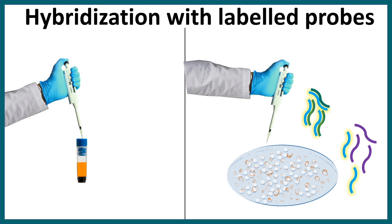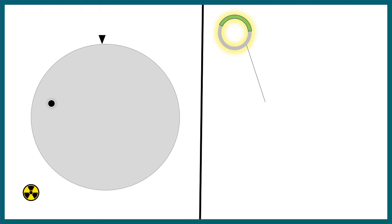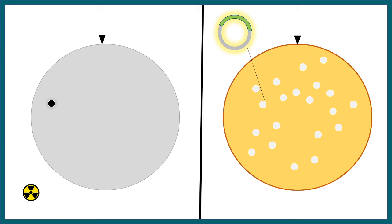After washing the nitrocellulose membrane and developing it, you would see a spot at a specific region corresponding to the sequence of interest. By tracking that particular spot back to the corresponding replica plate, you can identify the location of the colony harboring your gene or cDNA of interest. You can then isolate and expand that colony for future use. This is the essence of colony hybridization — fairly simple to understand, and very important in the 1970s and 1980s.